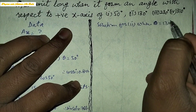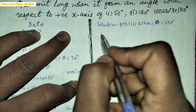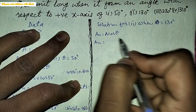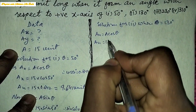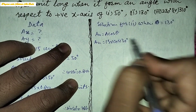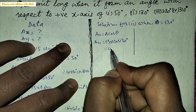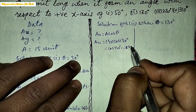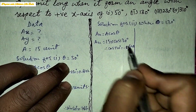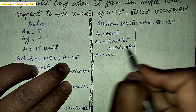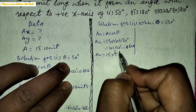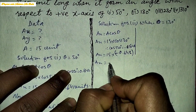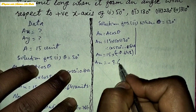Solution for (2): when theta is equal to 130 degrees. For the X component, Ax is equal to A cos theta, so Ax is equal to 15 into cos 130°. The value of cos 130° is minus 0.648, so Ax will be 15 into minus 0.648, giving minus 9.6 units.